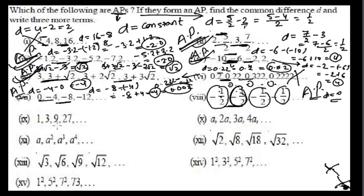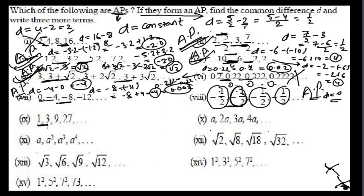This sequence has terms 1, 3, 9... The common difference between the first two is 3 minus 1 equals 2, but then 9 minus 3 equals 6. Since the common difference is not the same, this is not an arithmetic progression.